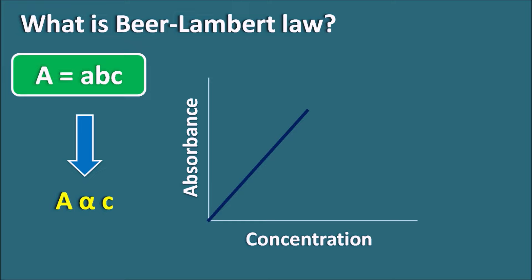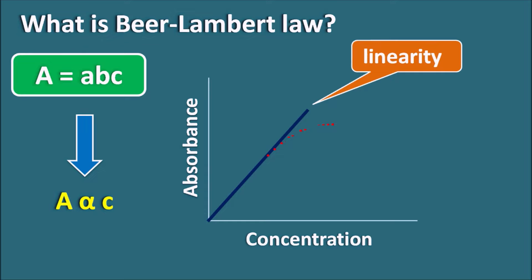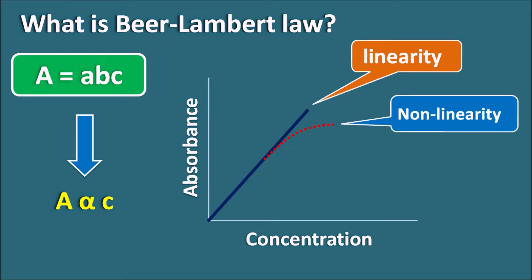Because this is just like Y = MX — absorbance is on the Y axis and concentration is on the X axis, giving a straight line passing through the origin. Beer-Lambert's law states that absorbance and concentration show a linearity in their relation. Sometimes we can observe a deviation from this straight line and a non-linearity in the absorption curve. Today we will see the different reasons for these deviations and how they can be controlled and minimized to restore linearity within the Beer-Lambert law.